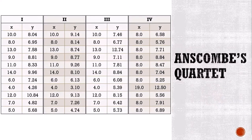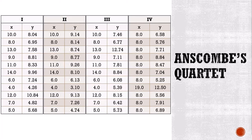The power of data viz hasn't always been appreciated. For a long time, many statisticians considered it to be largely a waste of time, something that could be bypassed in favor of simple summary statistics like means, medians, correlations, and the like. Determined to show the error of this view, in 1973 the statistician Frank Anscombe published his famous Anscombe's Quartet in a paper entitled "Graphs and Statistical Analysis."